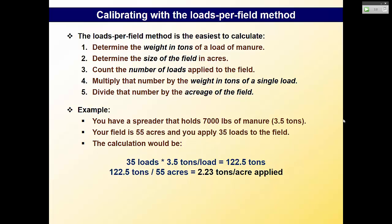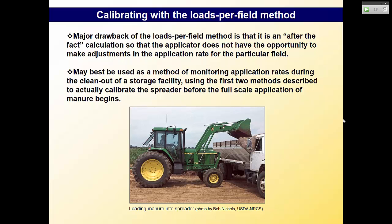The loads per field method: you know you put out 35 loads across a 55-acre field, and every manure spreader holds 3.5 tons. So 35 times 3.5 divided by 55 acres gives your application rate. It's easy to calculate, but the major drawback is that it's an after-the-fact calculation — by the time you've calculated it, you've already put out the manure. If you wanted three tons per acre but ended up applying two tons, it's too late.